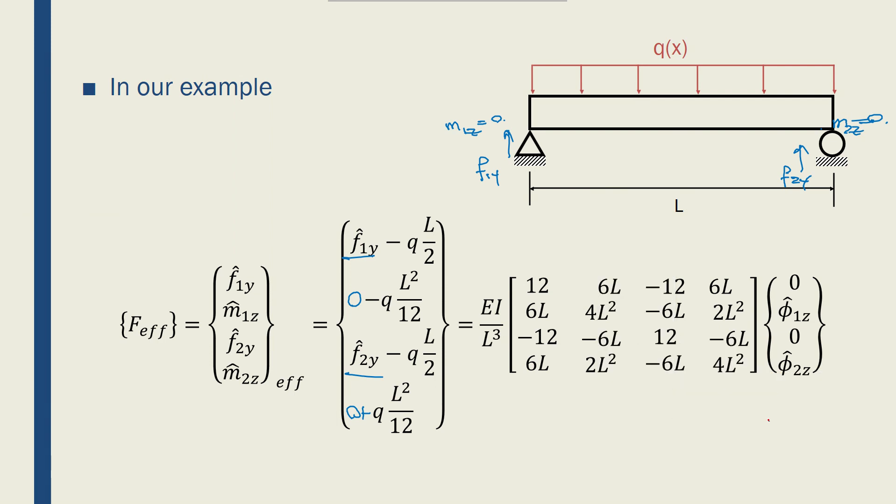So the boundary conditions here, and let me write that this is a constant Q, is that d1y is 0 but phi1z is our unknown.